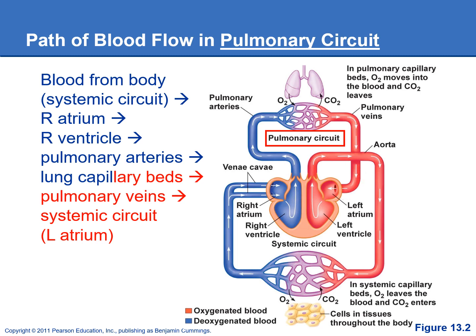Normally we think of arteries being red and veins being blue, which is true in the systemic circuit. But in the pulmonary circuit, it's just the opposite. Pulmonary arteries are blue in color because they're carrying deoxygenated blood, and pulmonary veins are red in color because they're carrying the oxygenated blood.